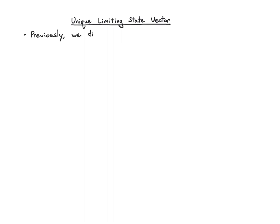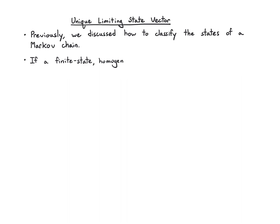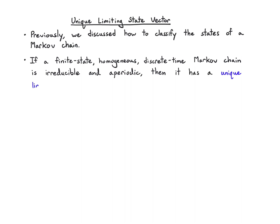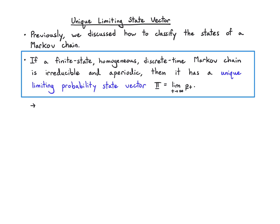Let's talk about the unique limiting state vector for a Markov chain. If a finite state, homogeneous, discrete-time Markov chain is irreducible — meaning it has a single communicating class — and aperiodic, meaning all states have period one, then it has a unique limiting probability state vector, which we call pi. That's the limit of the state vector as time goes to infinity, so it basically settles into a steady-state distribution.